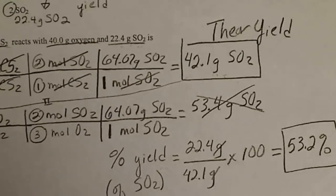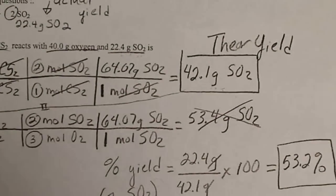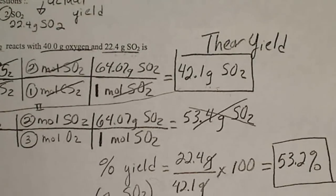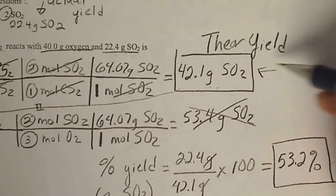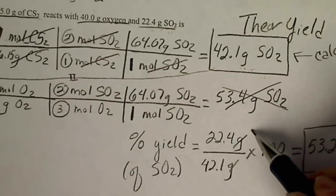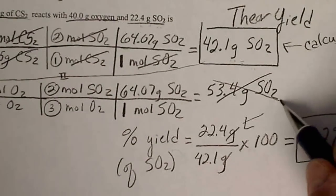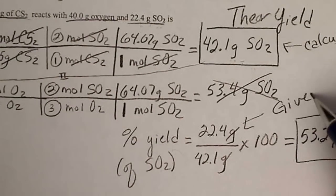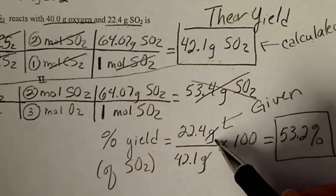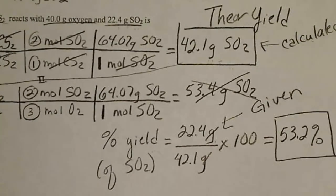This seems like a lot of work for one problem, but in order to determine a percent yield, we have to calculate the theoretical yield. So remember, in that type of problem, the theoretical yield is calculated, and the actual yield is given in the problem. This would be, for example, like the aspirin that we weighed out in lab.